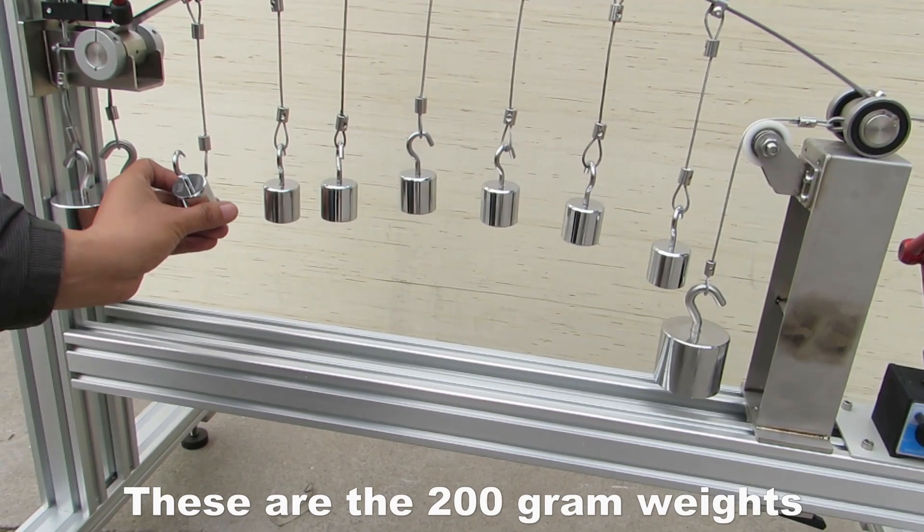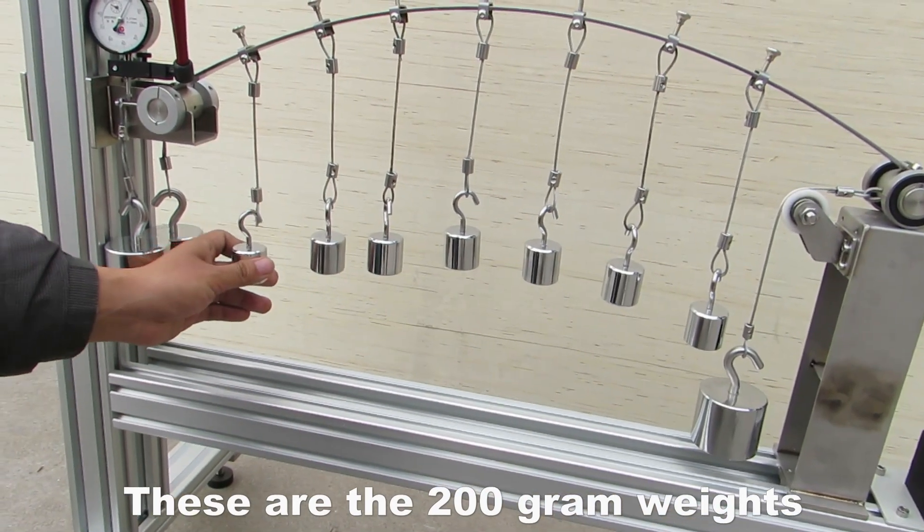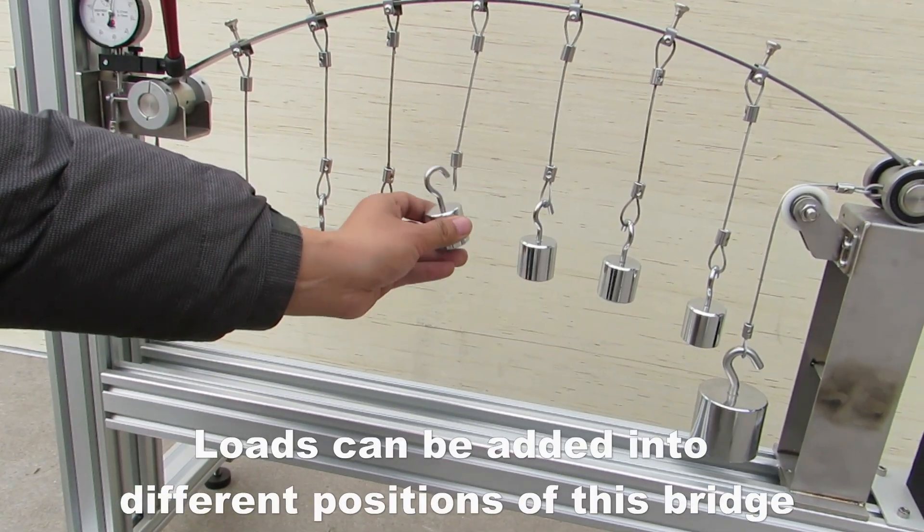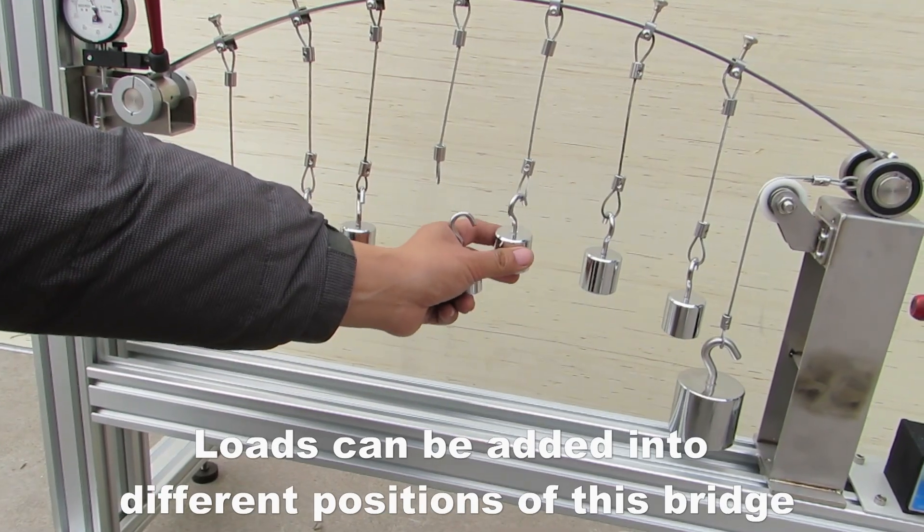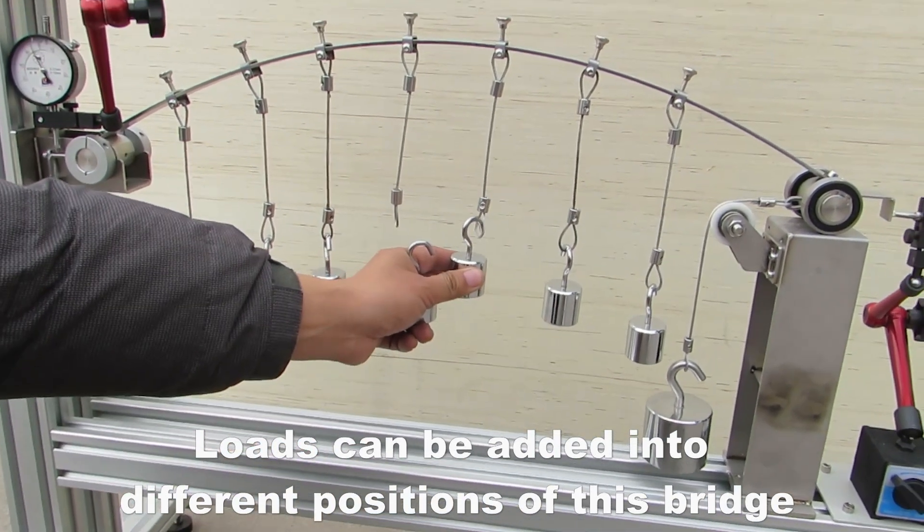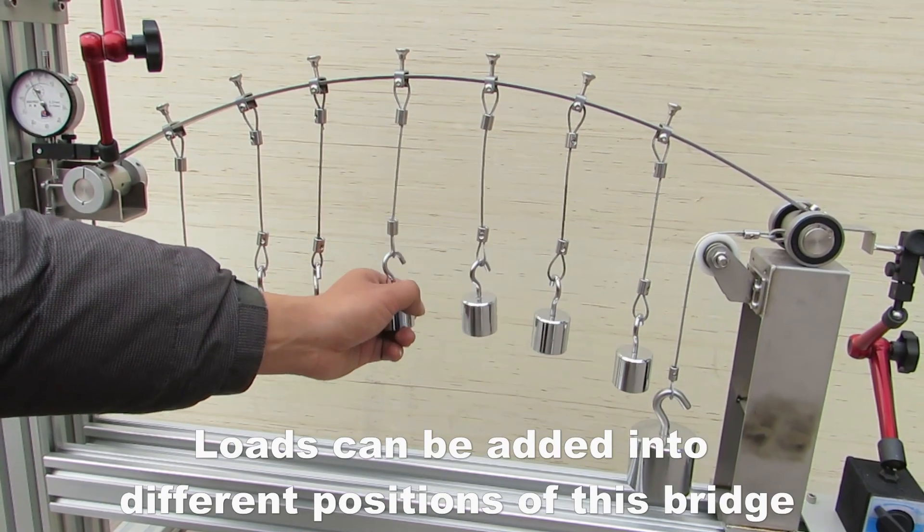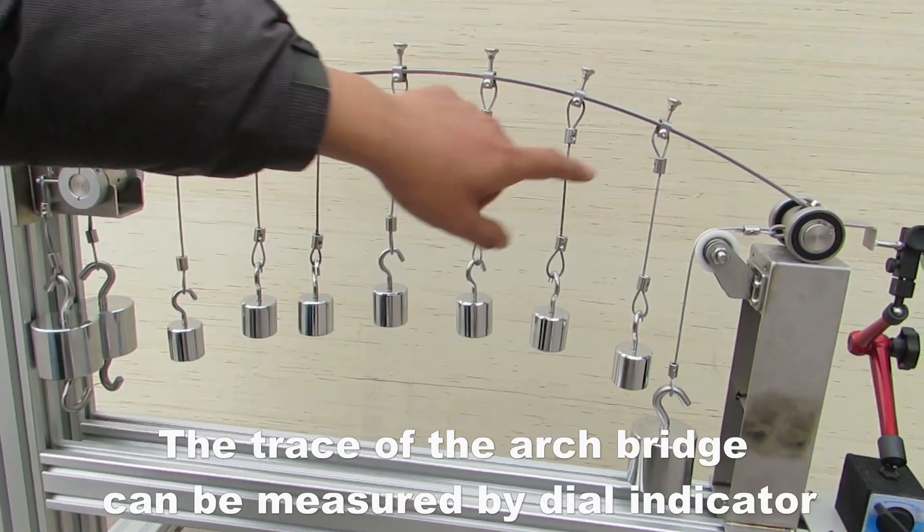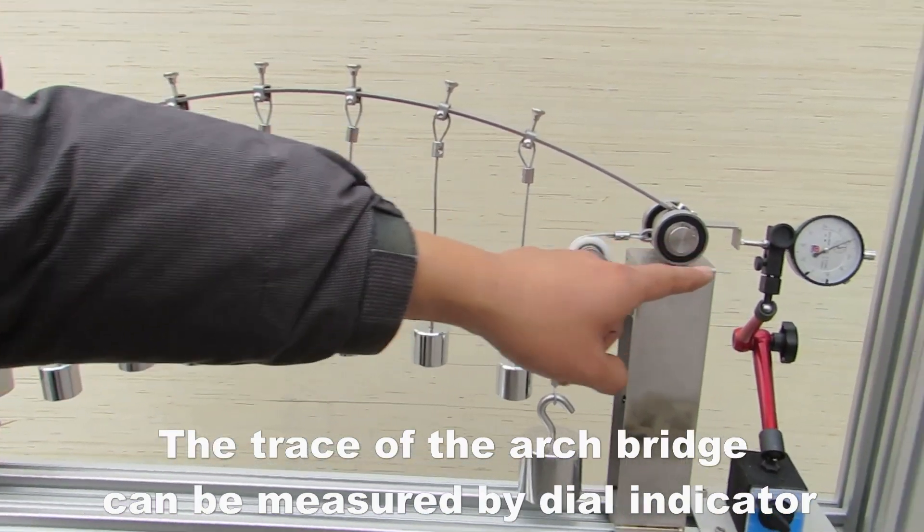These are the 200 gram weights. Loads can be added into different positions of this bridge. The trace of the arch bridge can be measured by dial indicator.